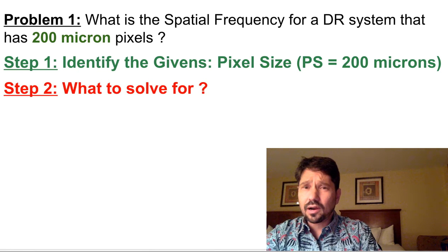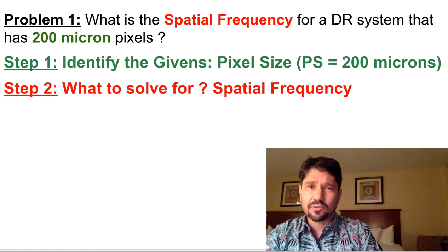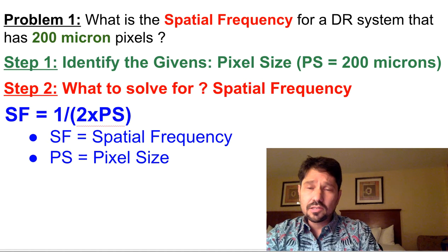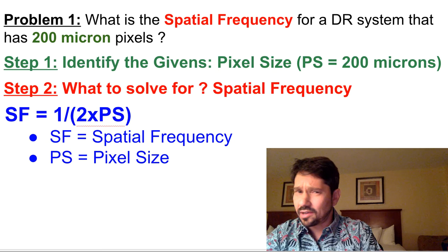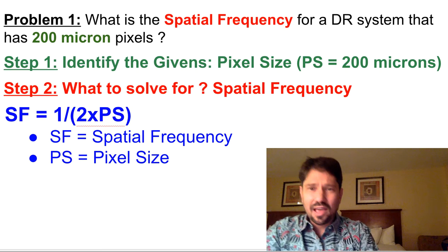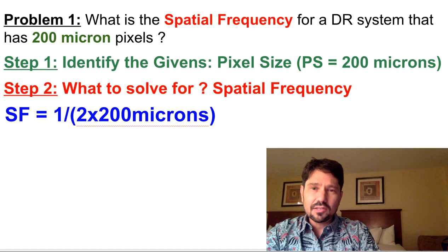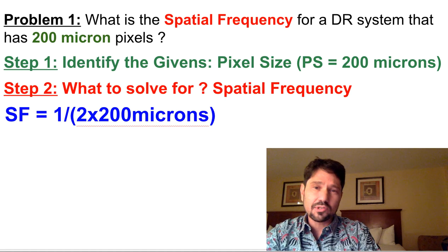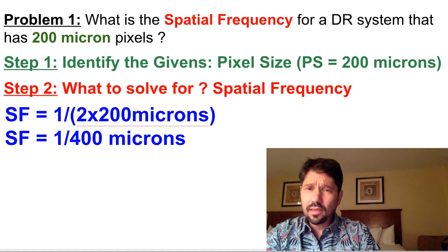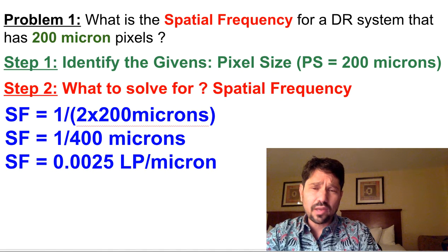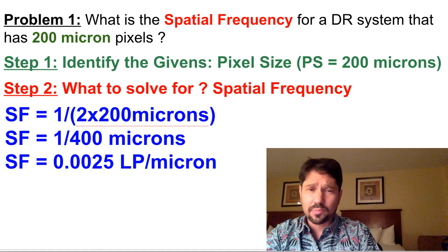What to solve for? All right, in this problem, we're going to solve for spatial frequency. So we've got our formula that we've memorized because we don't have a crib sheet, and it's SF equals 1 over 2 times the pixel size. So we'll put in 1 over 2 times 200 microns, the same as 1 over 400 microns, which equals 0.0025 line pairs per microns.